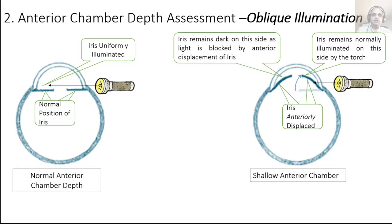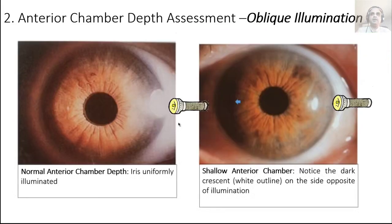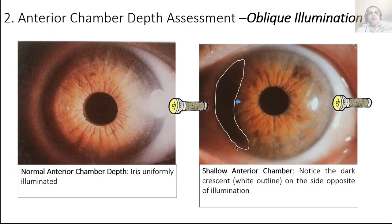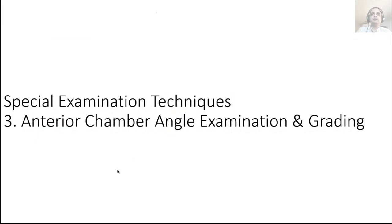On torch examination: a normal anterior chamber depth versus a shallow anterior chamber. When you do this on a patient, this is what you see with a normal anterior chamber depth, and this is a shallow anterior chamber with that dark crescent on the side opposite the illumination.